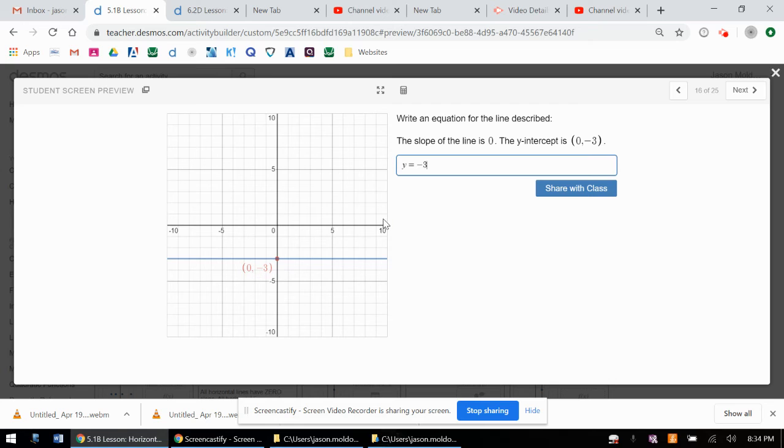There isn't any work to show for this other than remembering those two summary slides that, if you didn't write those down, you want to go back to, which is that a horizontal line has 0 slope and is y equals a number. We click share with class.